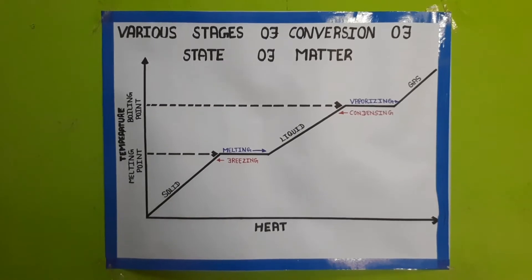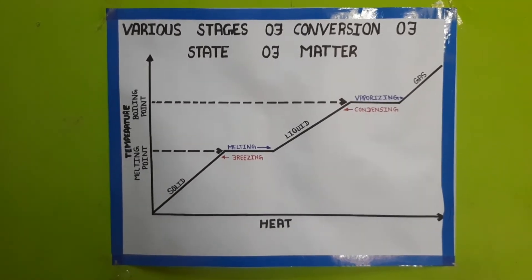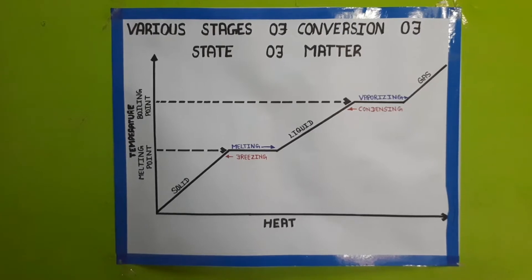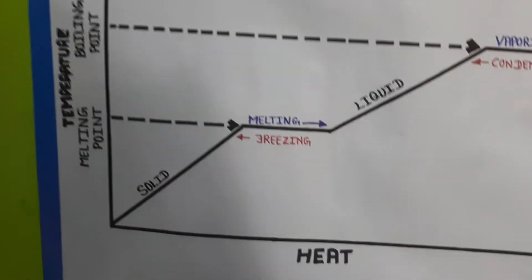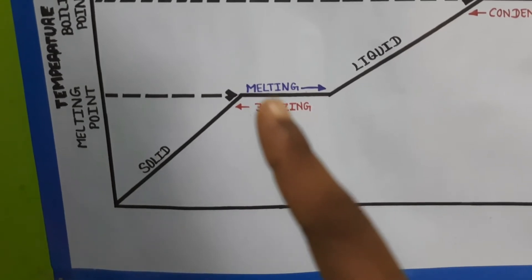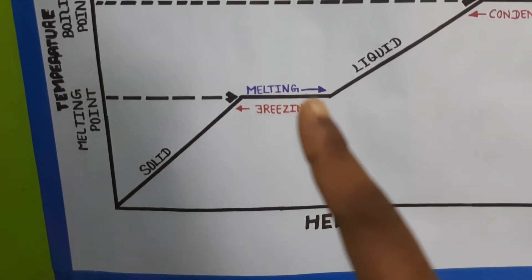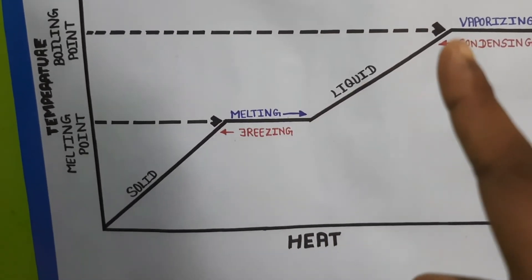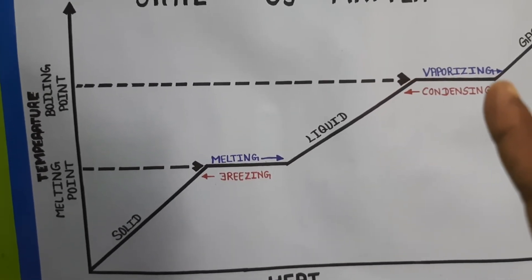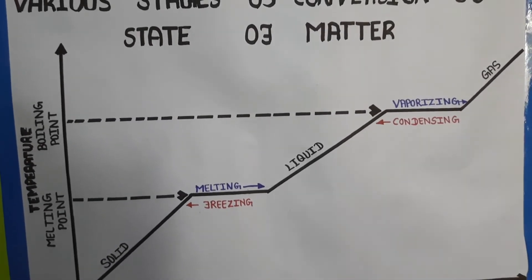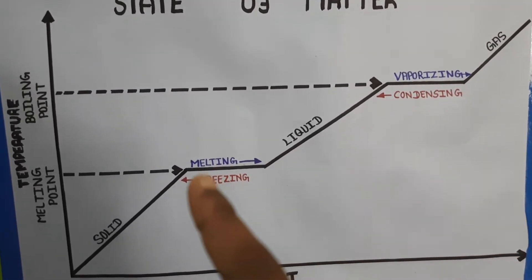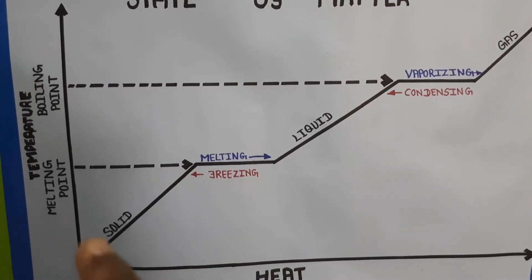The next chart covers the various stages of conversion of state of matter — how the state of matter converts. Heat is on the x-axis and temperature is on the y-axis. There is a melting point in temperature. The liquid reaches the melting point, and then the temperature increases to the boiling point. The liquid changes into gas by the vaporization process. The gas on condensing changes back into liquid.